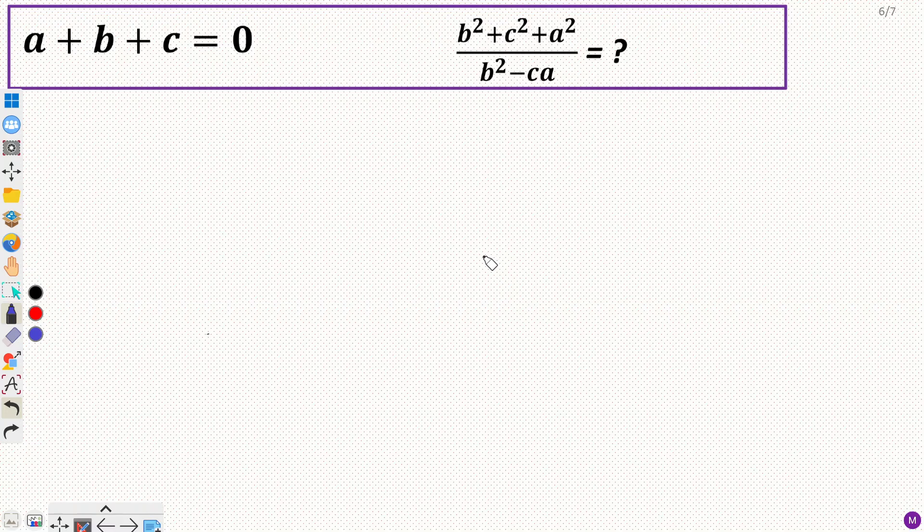Hey everyone, in this video we will discuss an algebra question. The question is: if a plus b plus c equals 0, then what will be the value of this given expression? The expression is b squared plus c squared plus a squared divided by b squared minus ca.